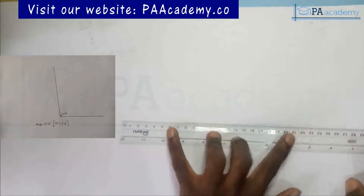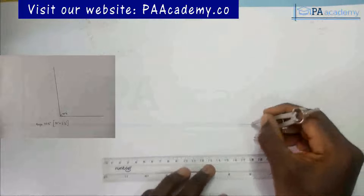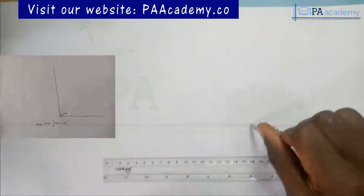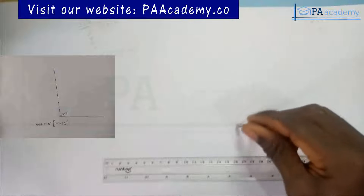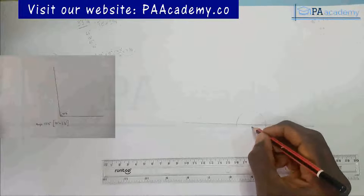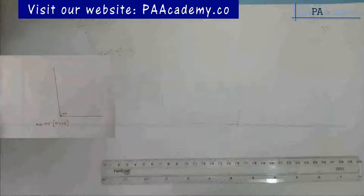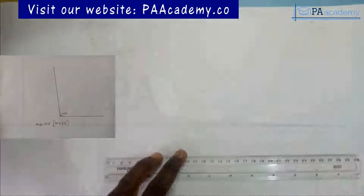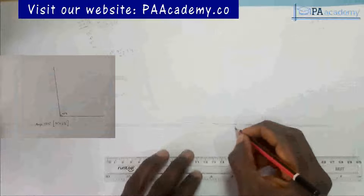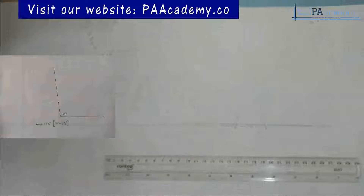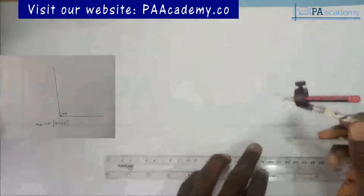I've drawn my straight line and I'm going to pick a center. From that center I'm going to draw a semicircle on that line. For proper understanding, let me call the center of this semicircle point O, where the semicircle is touching the straight line on one side point A, and the other side point B. The first thing I'm going to do is to construct angle 90.